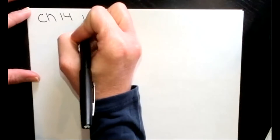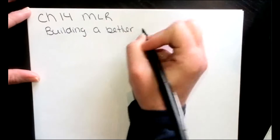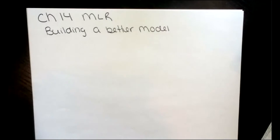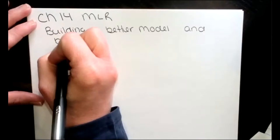Today, I named this in our notes day 25 and day 26, because I would split this into two days. But we're still in chapter 14, still looking at multiple linear regression. Today, we're going to talk about building a better model, and we're going to look at what we call backward elimination.